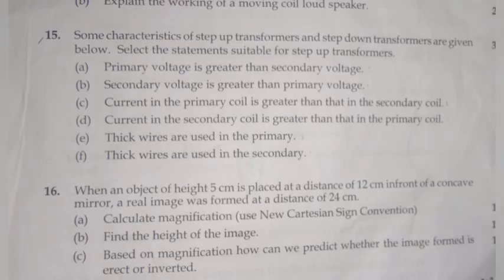(b) Find the height of the image. m equals hi by ho, so hi equals m into ho, equals minus 2 into 5. Answer: minus 10 cm.